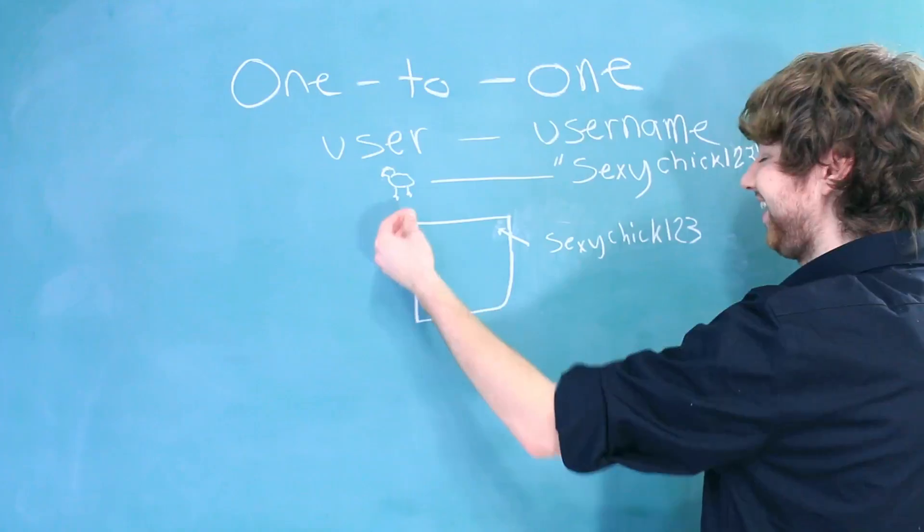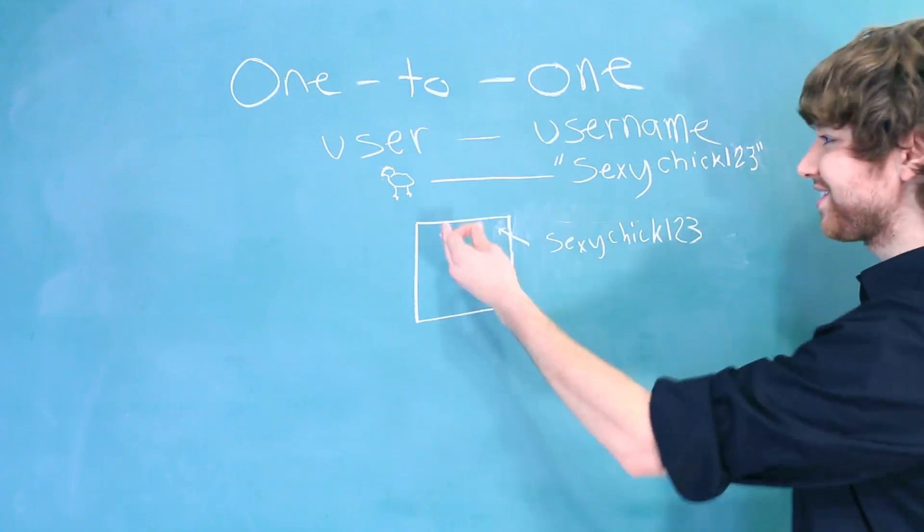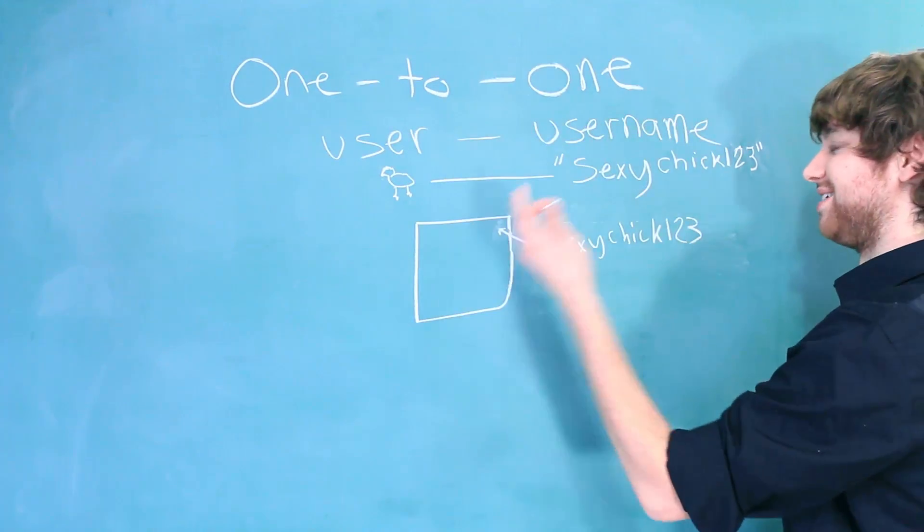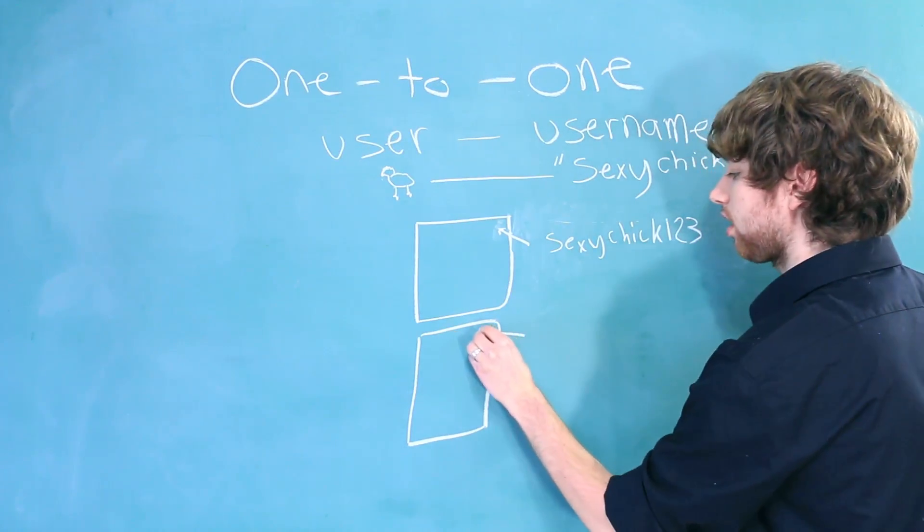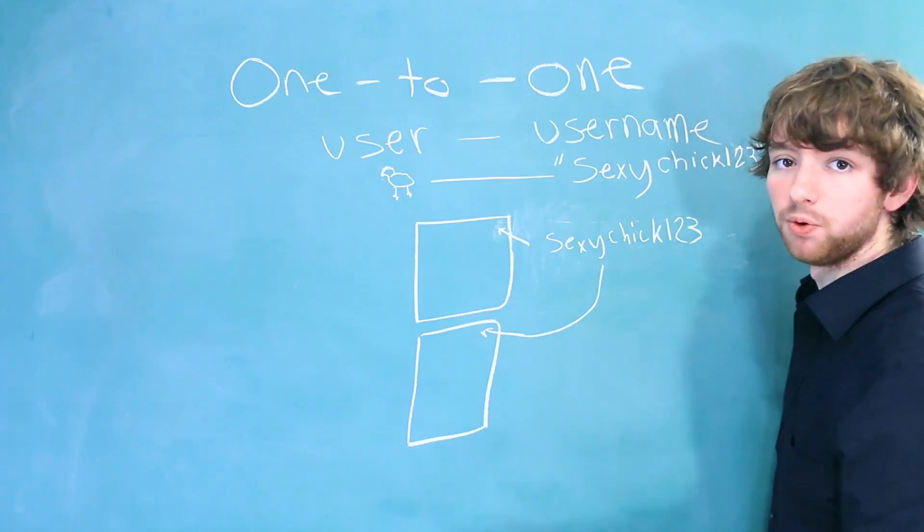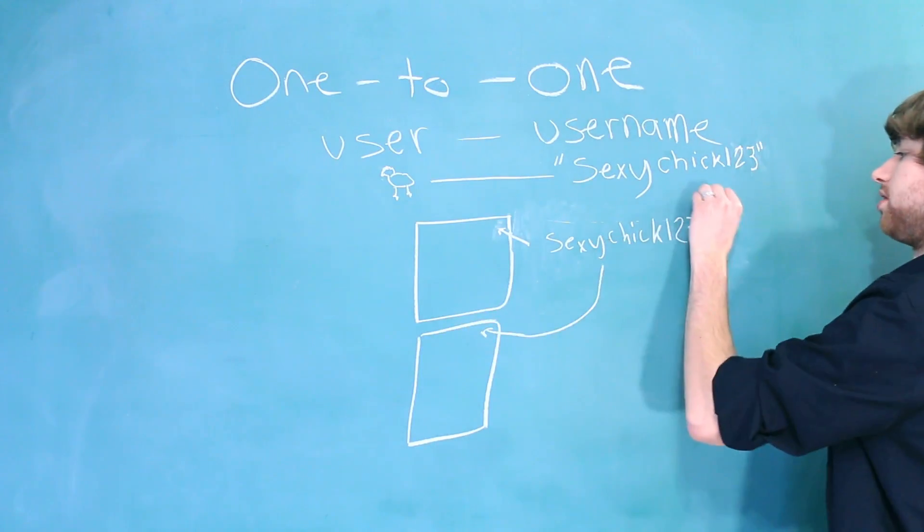So, this chick, this is the most ridiculous example ever. This chick can write multiple blogs. But in this situation, each blog can only be written by one individual. In that situation, this would be a one-to-many.